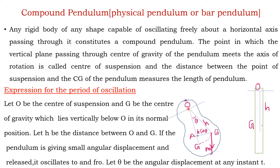In the figure, O is called the center of suspension, because O is the point at which the horizontal axis meets the vertical plane passing through the center of gravity. The center of suspension is the point at which the vertical plane passing through the center of gravity meets the axis of rotation. Here, O is the center of suspension and G is the center of gravity. The distance between the center of suspension and the center of gravity is called the length of the pendulum.